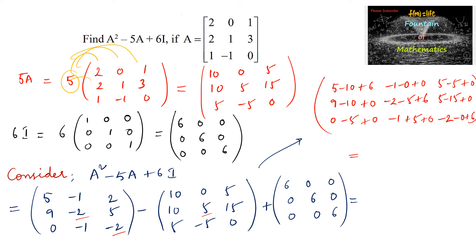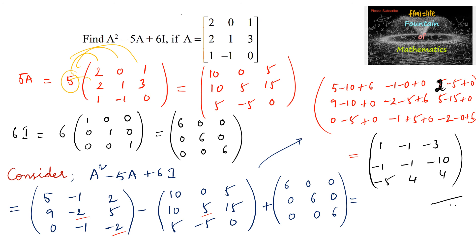So the answer is the 3×3 matrix: [1, −1, −3; −1, −1, −10; −5, 4, 4]. Thank you.